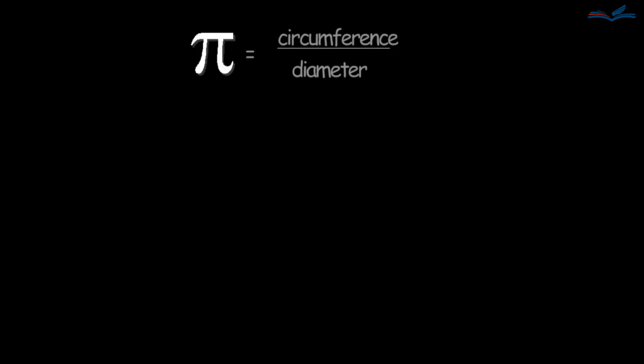Could there be universes where pi is different, say 4? Or perhaps universes where it is not constant at all, but instead a function of the diameter? Why does this world have this particular value of pi?